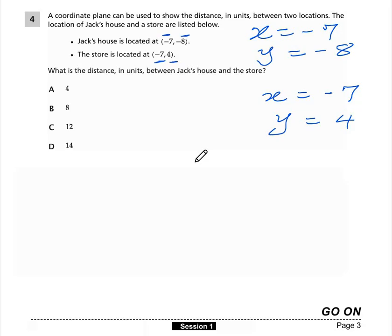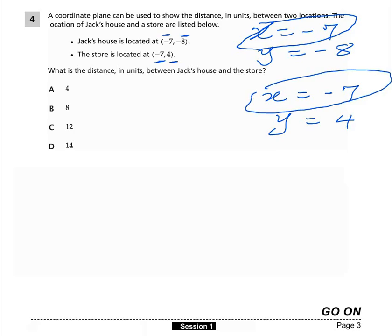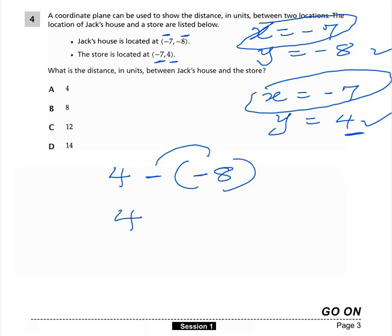Since both points have the same X coordinate — both are -7 — they lie on the same vertical line. The distance between them is the difference in their Y coordinates. The store's Y coordinate is 4 and Jack's house Y coordinate is -8. So 4 minus (-8) equals 4 plus 8, which is 12. The right answer is C.